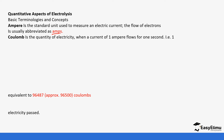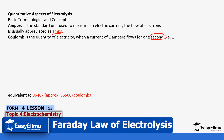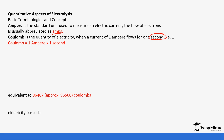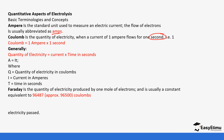A coulomb is the quantity of electricity when one ampere of current flows for one second. When working with time, you must remember to convert to seconds — even if the time is given in hours or minutes. The quantity of electricity Q equals current I times time t, where Q is in coulombs, I is in amperes, and t is in seconds.